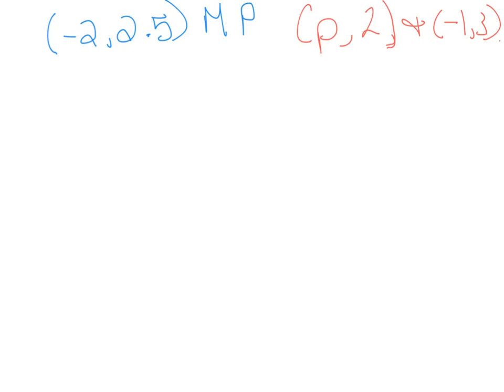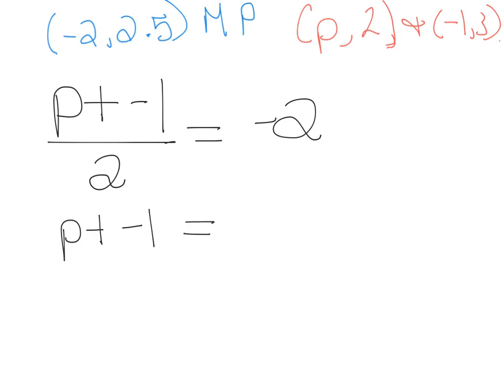So if you were to set up the formula, you're going to have p plus negative 1 divided by 2, and that's going to have to equal my negative 2 piece. And now it's just simply a linear equation that I'm solving. Multiply by the 2, add the 1 over, so the value of p has to equal negative 3. So just because something sounds tricky or different doesn't mean that it is by any sort of the imagination.